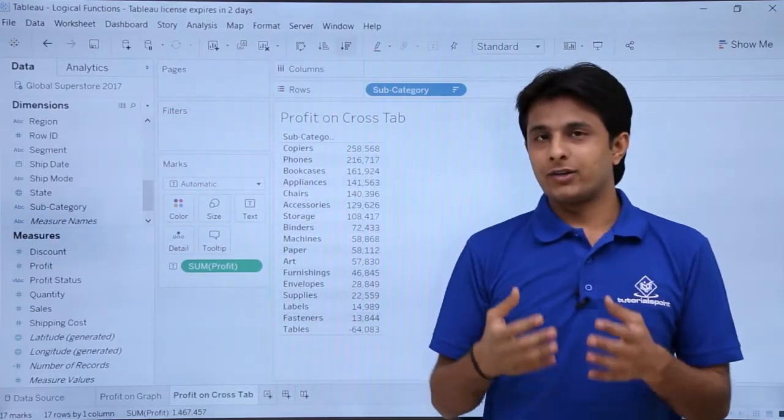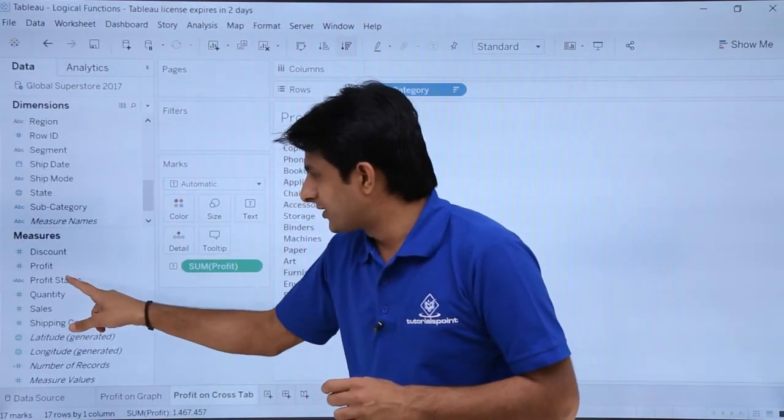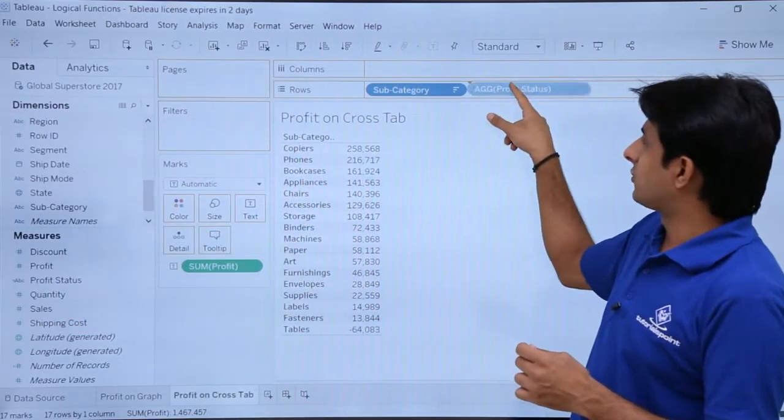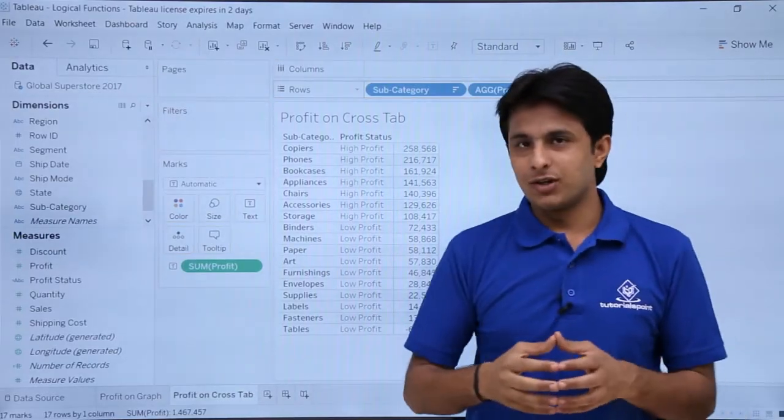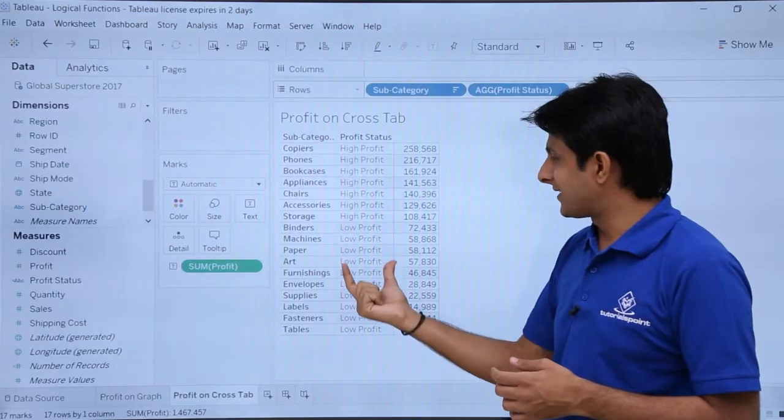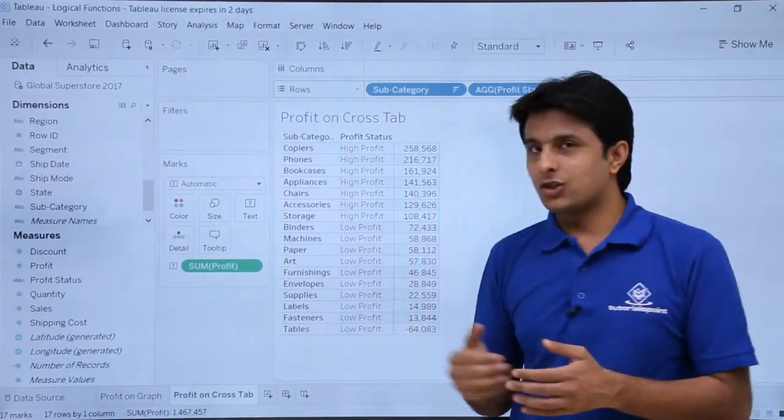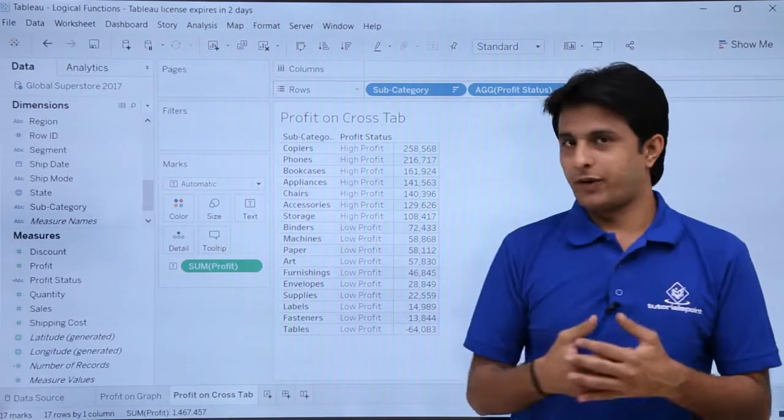Now if I want to find out high profit, low profit. So already I've created here as profit status. Pick up and drop into this rows itself. So here if you observe what it is given here. It says high profit and after some time it says as low profit because we have given the condition itself at this place. And it makes a job very easy to understand which are high profit, which are low profit.